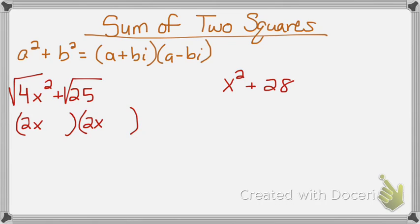But since it's the sum of two squares, I'll have plus 5i and minus 5i, that's my answer.